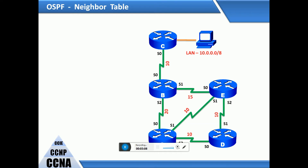The neighbor table contains information about directly connected OSPF neighbors. The database table contains information about the entire topology view with respect to each router. There are totally five routers in this example using class A address 10.0.0.0/8. This shows which is the best shortest path going through this router and the alternate shortest path to the selected client.